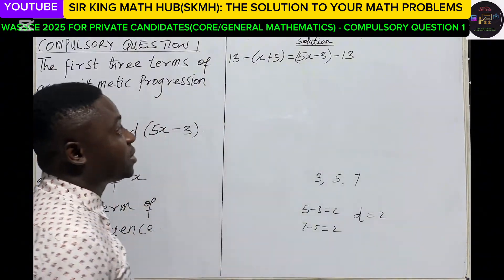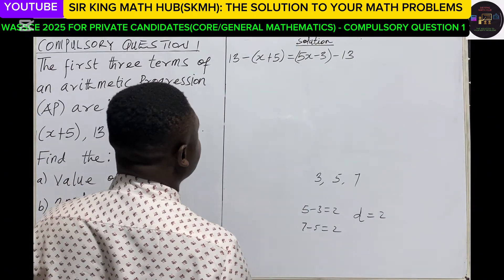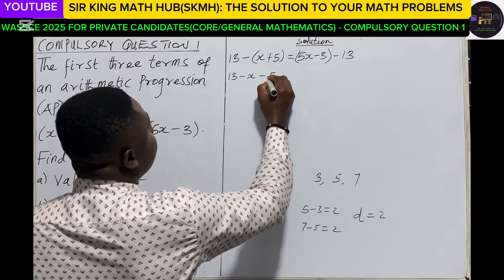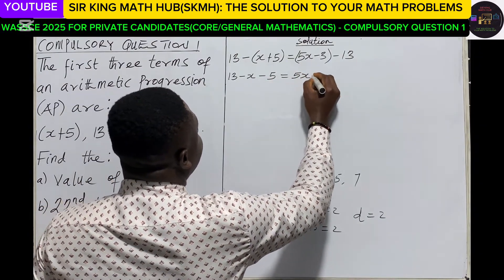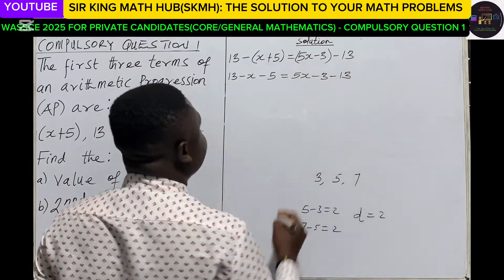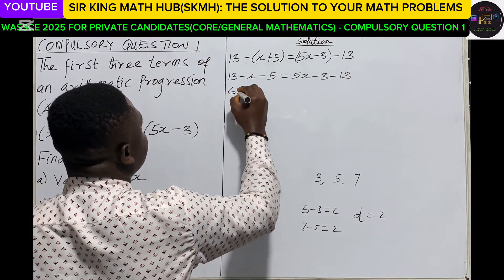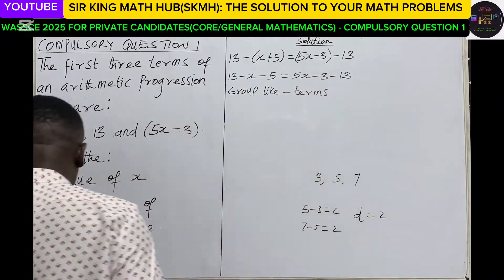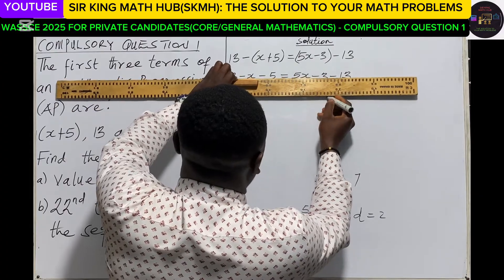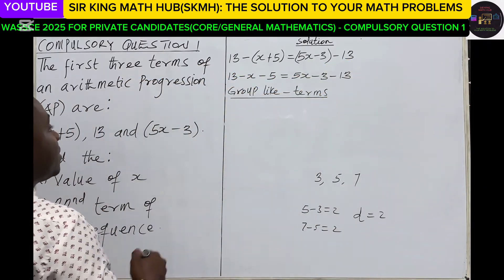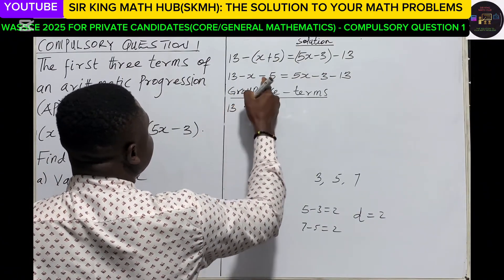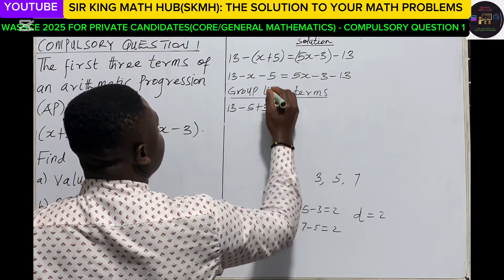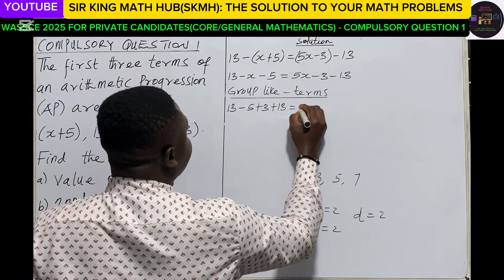We've been able to create an equation out of the three consecutive terms. Now let's solve for x. We have 13, I will expand the bracket, minus x minus 5, and this must be equal to 5x-3 minus 13. At this point I'm going to group like terms, all variables on the right and all numbers on the left. So starting with the numbers: 13 minus 5 plus 3 plus 13, and this must be equal to 5x plus x.